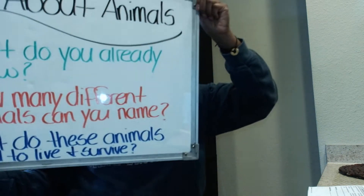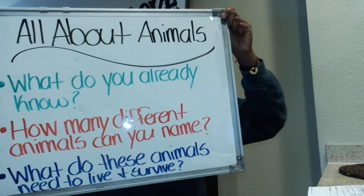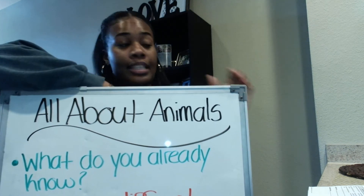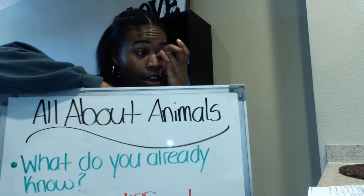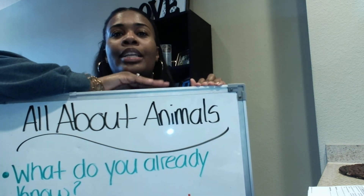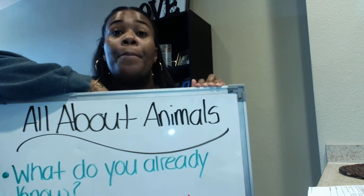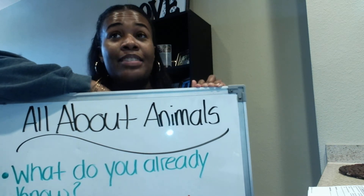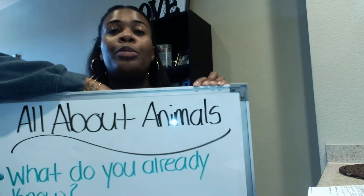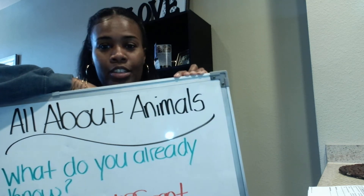Third thing: what do these animals need to live and survive? Any animal that you listed on your second step, I want you guys to tell me what that animal would need to live and survive. For example, if I talk about a penguin that lives in the Antarctic, I would name all the things that that penguin would need to survive while living in the Antarctic.